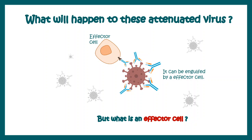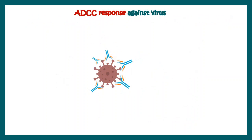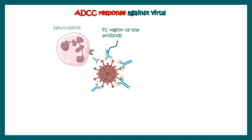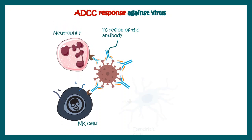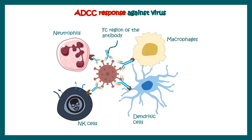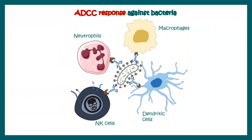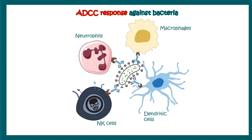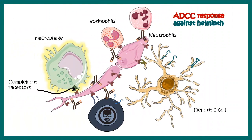But the question is: what are these effector cells? If we think about viral infection, these effector cells could be several cell types which have FC receptors — cells like neutrophils, NK cells, dendritic cells, or macrophages — all can potentially act as effector cells because all of them have FC receptors on them. Among them, the most important one is the NK cells. A similar kind of response happens against bacteria or even helminth infection, and thereby the pathogens are eliminated.